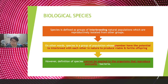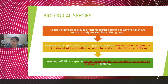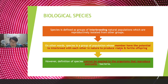For example, using humans: humans are one population, and males have the potential to interbreed with females in nature. When they do, they can produce viable and fertile offspring. Viable means the offspring — like a baby — can live and has a long lifespan.